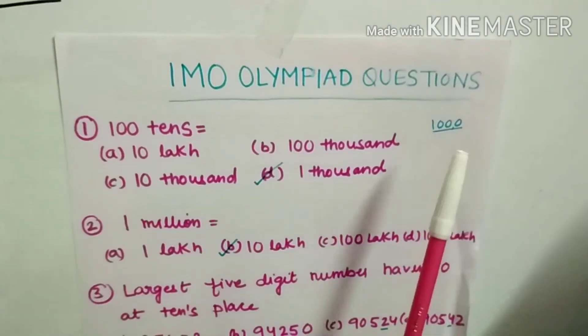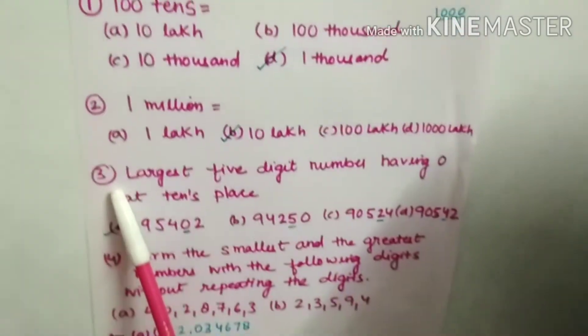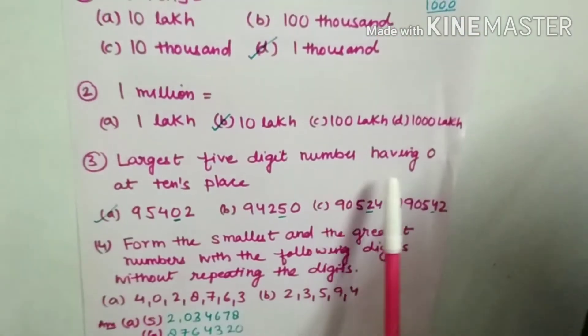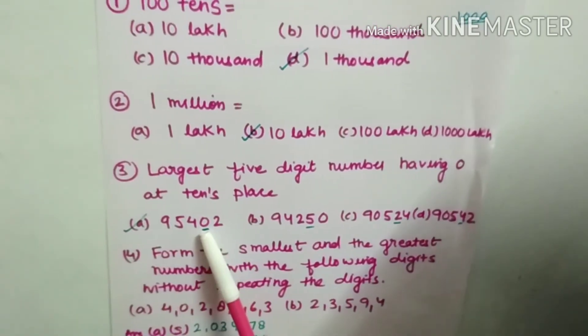Now we will discuss some practice questions. First: 1 lakh, 10 lakhs, 100 lakhs. Third: largest five digit number having zero at the ten's place.